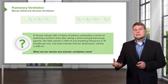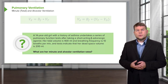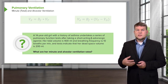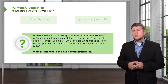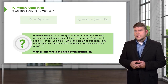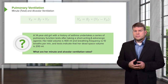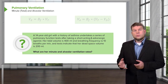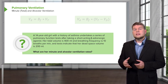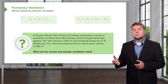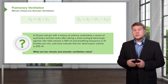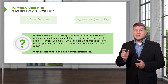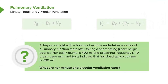Let's take this example of a 14-year-old girl with a history of asthma. She does a number of pulmonary function tests after taking a short-acting beta adrenergic agonist — a great example of this is albuterol. Her tidal volume is 400 milliliters and her breathing frequency is 10 breaths per minute. To calculate her minute ventilation, you simply take 10 times 400, which yields 4000 milliliters per minute.